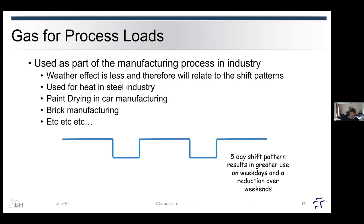Within industrial process use, you get these five-day shift patterns — greater use during the working day than over the non-working day. This can be reflected in prices, where we tend to get cheaper prices over the weekend because demand is lower. If we combine this with heating demand, we obviously get those patterns going forward over the winter.